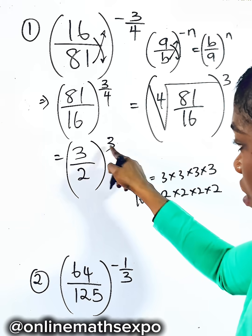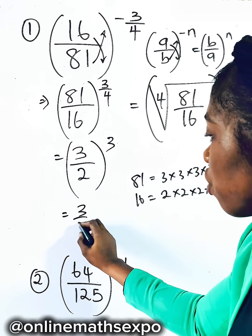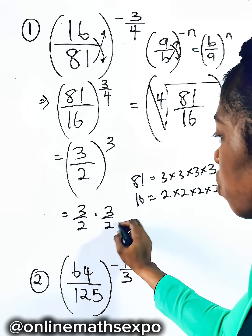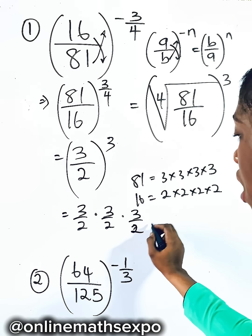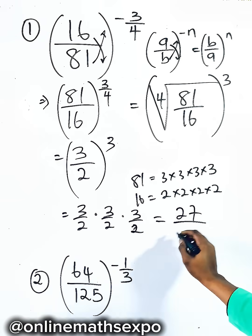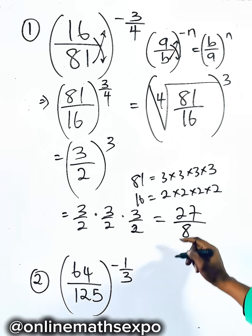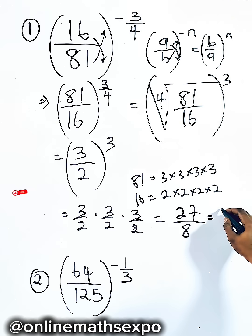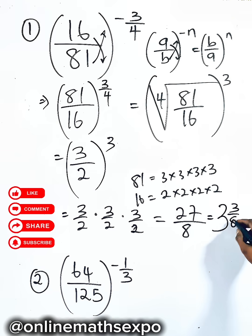This shows how many times this is multiplied, so it's 3 divided by 2 multiplied 3 times. And when you do that, this gives you 27, this gives us 8. And if you simplify this, it gives you 3 whole number 3 over 8. What do you think about this?